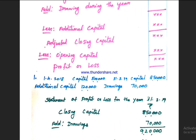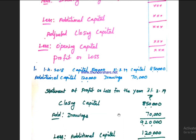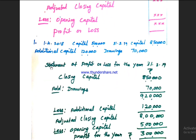Let's look at Exercise 1. As of 1st April 2018, the opening capital is 5 lakhs. The closing capital is 8 lakhs, additional capital introduced during the year is 1 lakh, and drawings taken out are 70,000. Now let's apply the Statement of Profit or Loss format.